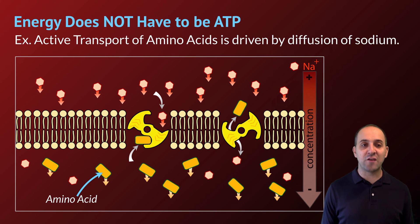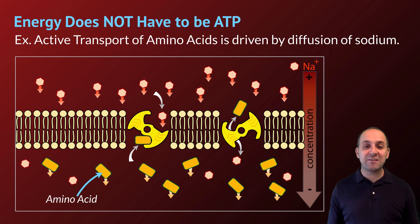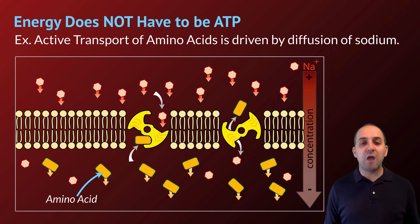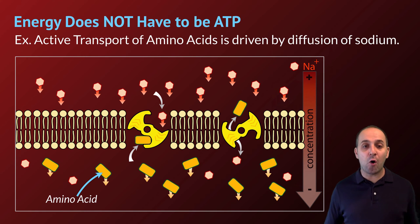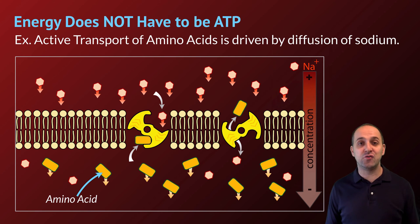There are other versions of active transport as well — some use ATP, but some do not. For instance, the passive transport of sodium down its concentration gradient can be used to drive the active transport of an amino acid against its concentration gradient. This is another typical strategy that cells use to accomplish active transport, but in all cases you need some sort of energy source, whether it be the chemical energy from ATP hydrolysis or the electrostatic energy released as sodium moves down its concentration gradient.